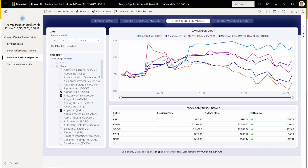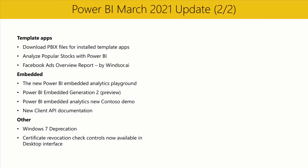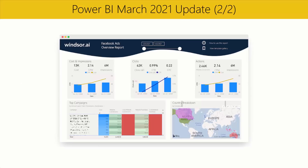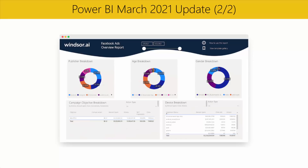Keep in mind that getting this stock data requires a Power BI Pro license, and if you don't have it, you can give it a try with a free trial. The other new template app is the Facebook Ads Overview Report by Windsor.ai. This template app helps advertisers and marketers connect Power BI to the Facebook Ads Insights API. The app contains a connector, so all you need is access to a Facebook Ads account. It offers automatic data refresh and you can set a date range to get historical data. You'll see two visually rich report pages full of insights about campaigns and ad sets, with breakdowns by country, age, gender, and more.